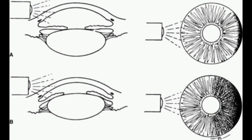The torch light should not shine directly into the patient's eye. The torch should not be kept so near to the patient's eye, and also the torch should not be kept so far from the patient's eye. If the position of the torch is wrong, we may get inaccurate results.